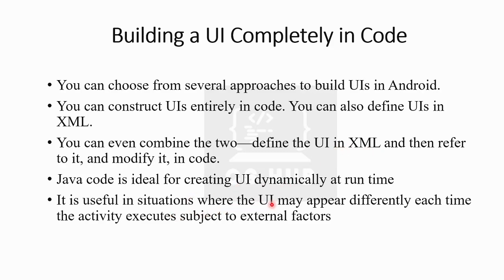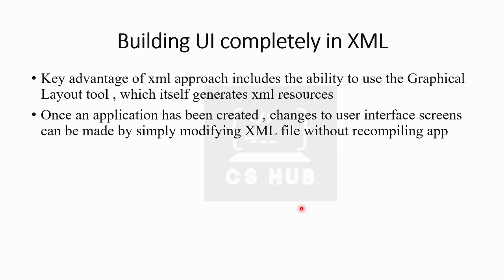Java code is useful in situations where the UI may appear differently each time the activity executes, subject to external factors. Building UI completely in XML has a key advantage: the ability to use the graphical layout tool, which itself generates XML resources. Changes to the user interface can be made by simply modifying the XML file without recompiling the app.